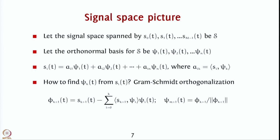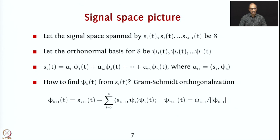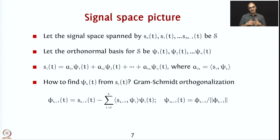In the last lecture, we were talking about how you can obtain a set of orthonormal basis signals from a set S₀, S₁ up to S_{M-1}. To do this, we use the Gram-Schmidt orthogonalization process, which takes the first signal, finds the component of the second signal not along the first to get a new signal, finds the component of the third not along the first two, and repeats. At the end, you get a basis set.